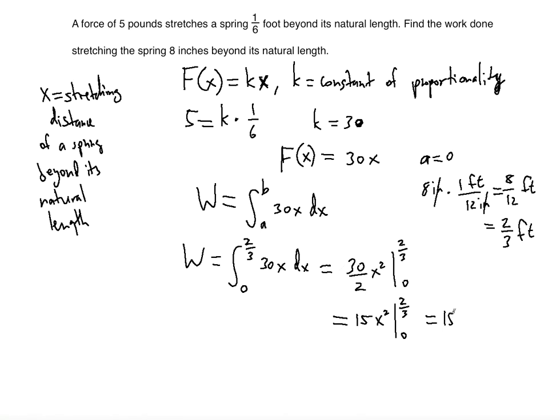So as a result, we can just evaluate the 2/3, because 0 is just 0. We don't have to subtract it. So we have 2/3 squared, and as a result, we have 15 times 4 over 9, which gives us...